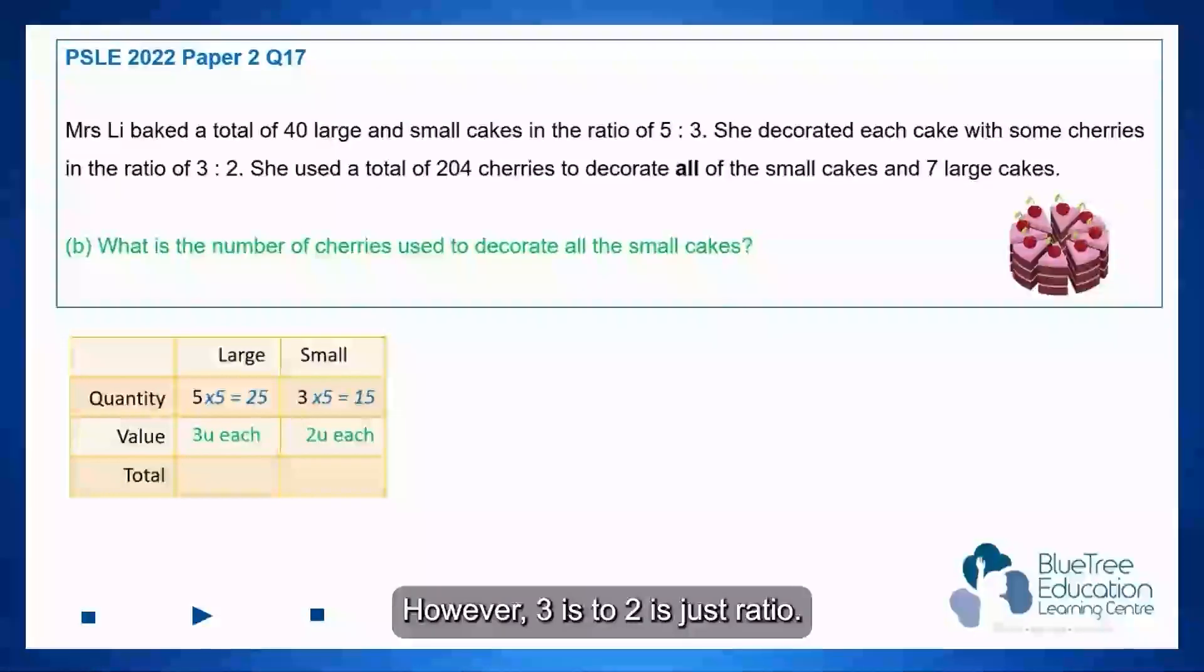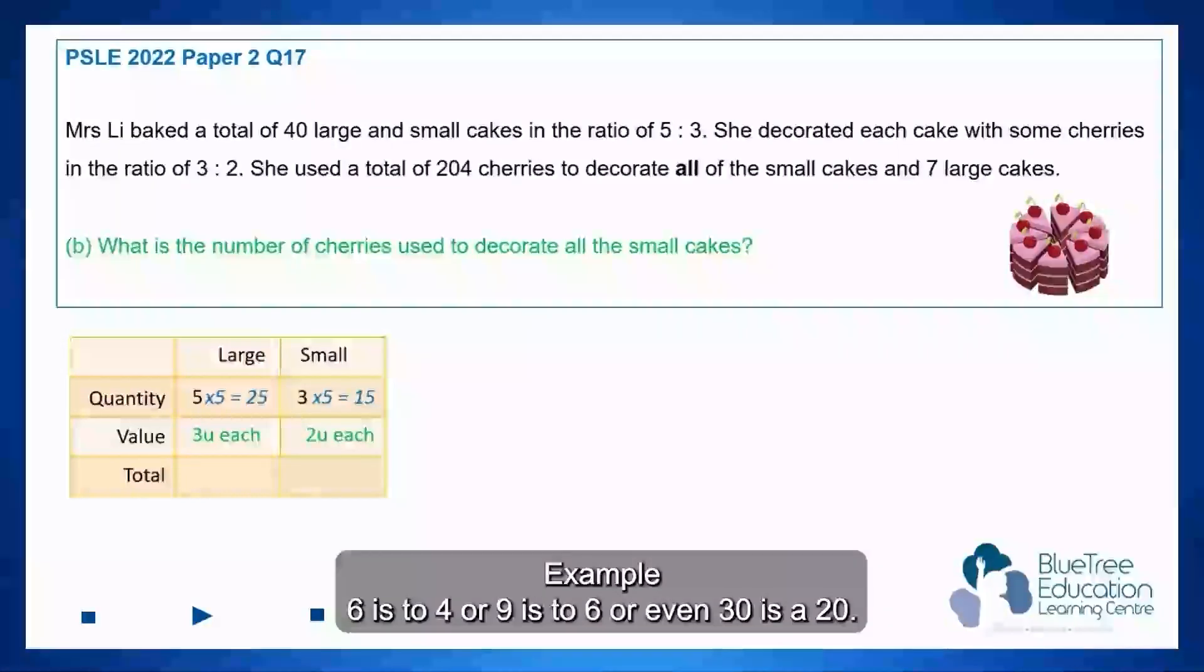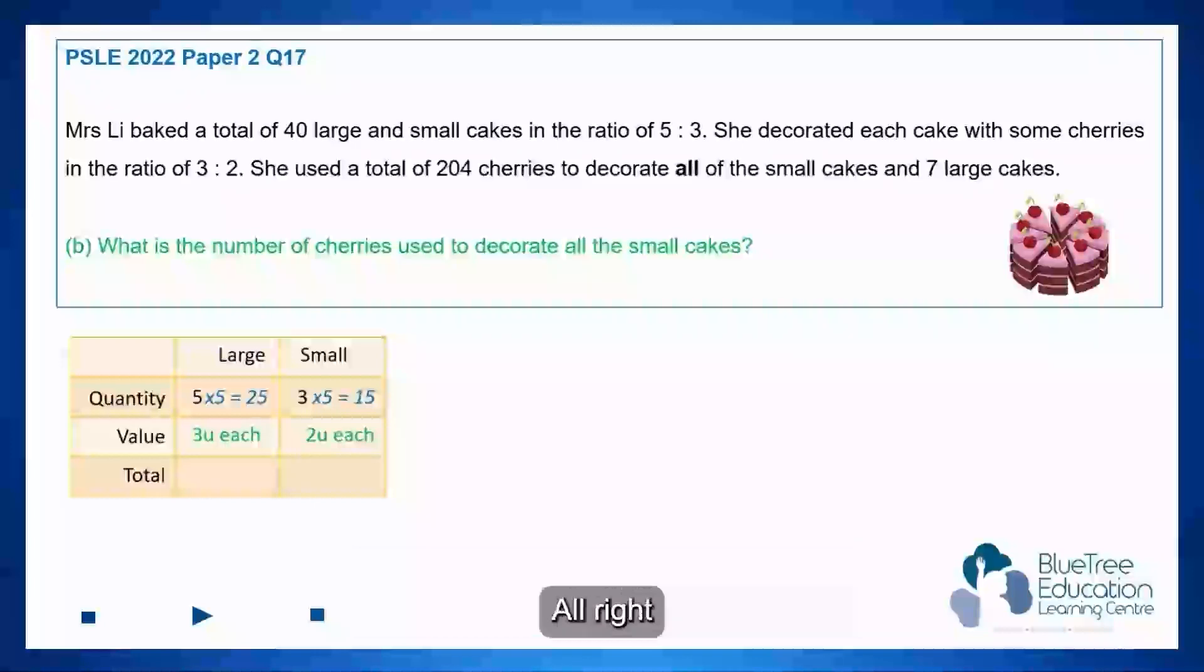However, 3 is to 2 is just ratio placed in the lowest term. The actual number could be any number in this proportion. Example, 6 is to 4, or 9 is to 6, or even 30 is to 20.